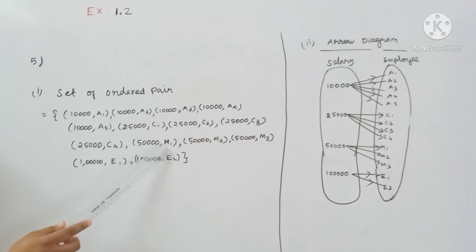Next, the manager's salary is 50,000. So 50,000 M1, 50,000 M2, 50,000 M3.